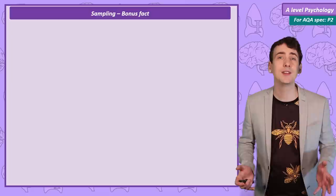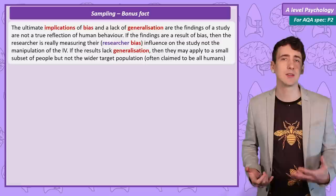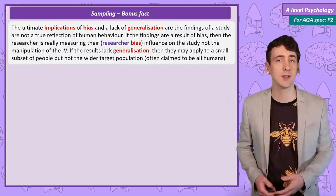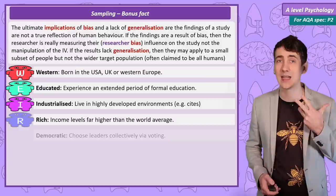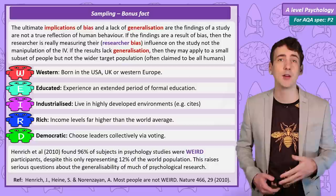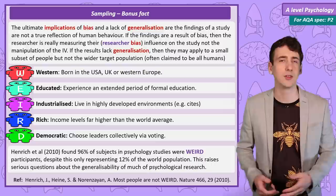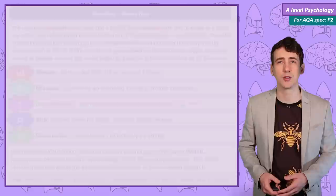A bonus fact about weird participants: when considering sampling we need to consider the implications of bias and generalisation. A criticism of psychology studies is that most of them have been completed on WEIRD participants — Western, Educated, Industrial, Rich and Democratic backgrounds. In fact, if you are an American university student you are 4,000 times more likely to be in a psychology study than a random non-westerner. This leads us to consider if much of what we know about psychology actually applies or generalises around the world. Also, the samples of many historical studies often ignored or underrepresented women, leading us to consider gender bias in much of accepted psychological theory.